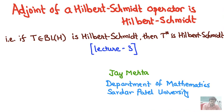Hello and welcome to the third lecture of the series on Hilbert-Schmidt operators. In this lecture we are going to see that the adjoint of a Hilbert-Schmidt operator is Hilbert-Schmidt. In the first lecture we saw the definition of Hilbert-Schmidt operators and some examples. In the second lecture we saw that a Hilbert-Schmidt operator is compact, and that the set of all Hilbert-Schmidt operators is a subset of the set of all compact operators — and in fact, it is a subspace.